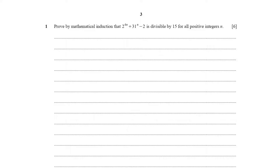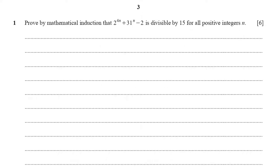Question number one is on mathematical induction. They say: prove by mathematical induction that 2 to the power of 4n plus 31 to the power of n minus 2 is divisible by 15 for all positive integers n.